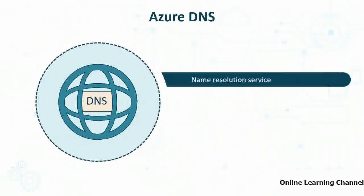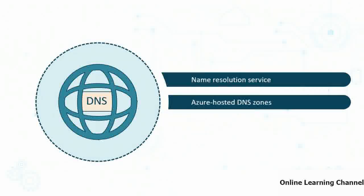Azure DNS is a name resolution service. DNS stands for Domain Name System and is commonly used to resolve friendly names on the internet to IP addresses. In Azure, DNS can also be used to host zones — where a DNS zone stores records for a DNS domain. For example, a zone for quick24x7.com stores records that resolve www.quick24x7.com to its related IP address.